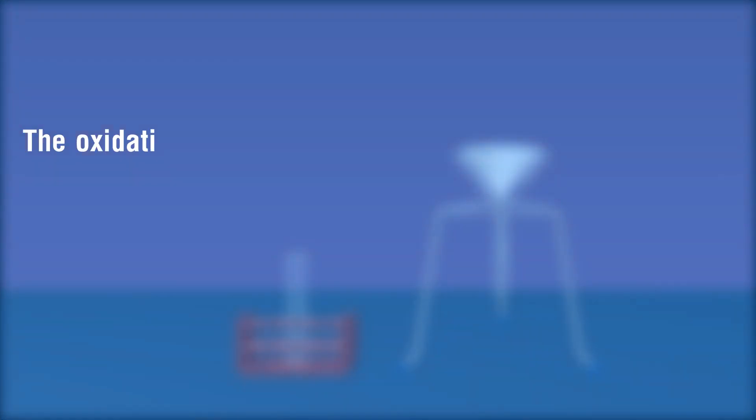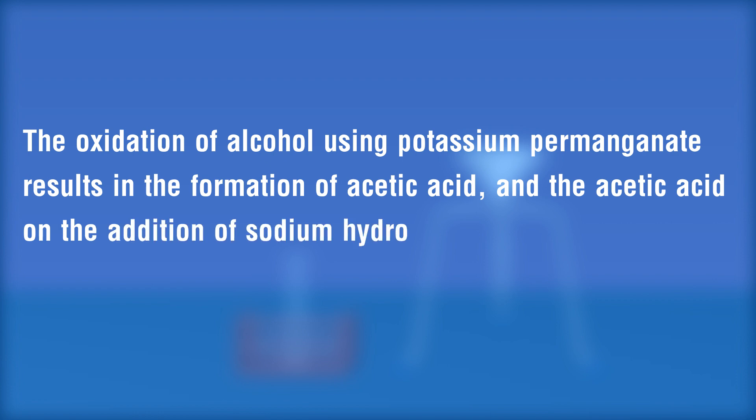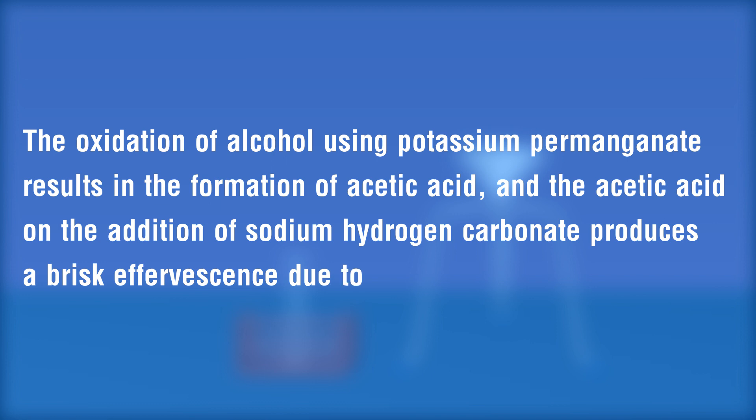The oxidation of alcohol using potassium permanganate results in the formation of acetic acid, and the acetic acid on the addition of sodium hydrogen carbonate produces a brisk effervescence due to the liberation of CO2 gas.